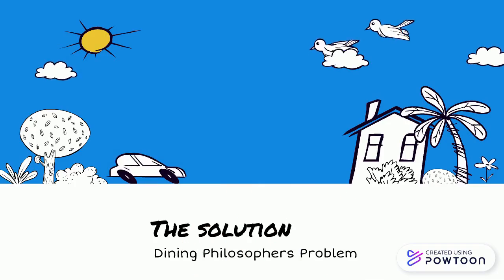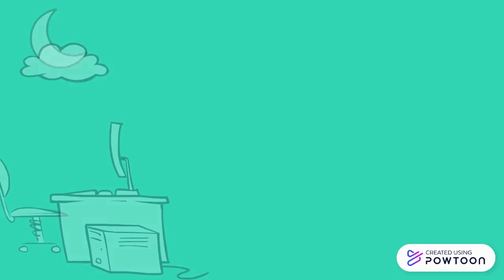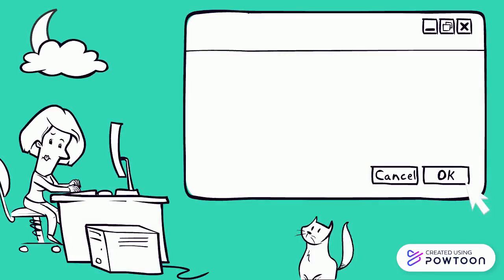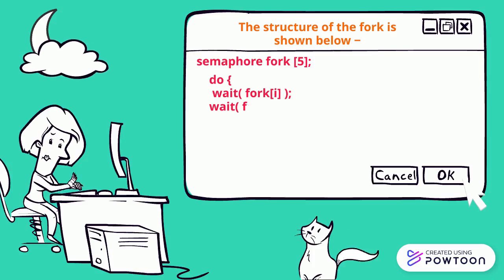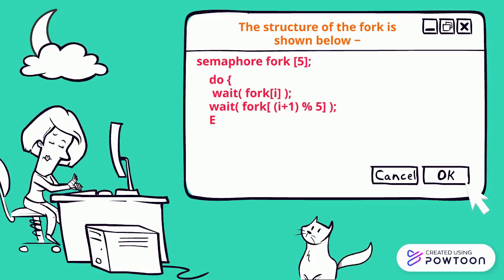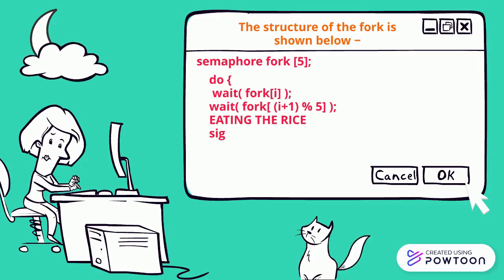The solution for the Dining Philosopher's Problem. A solution of the Dining Philosopher's Problem is to use a semaphore to represent a fork. A fork can be picked up by executing a wait operation on the semaphore and released by executing a signal semaphore.